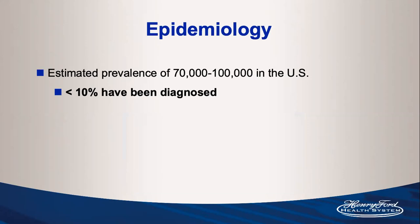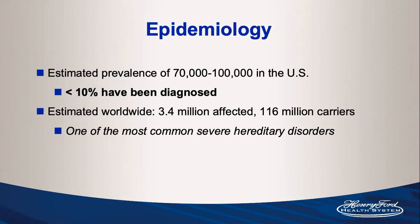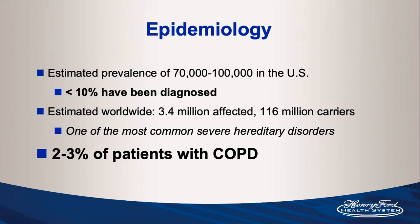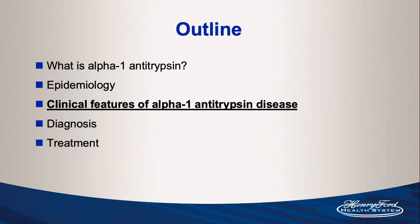The estimated worldwide number of cases is approximately 3.4 million, with 116 million carriers, making this one of the most common severe hereditary disorders — more common worldwide than cystic fibrosis. In the US it would be equivalent in prevalence to sickle cell disease. Approximately 2–3% of COPD patients probably have alpha-1 antitrypsin deficiency, so for every 30–50 COPD consults you see in clinic, probably one has alpha-1.